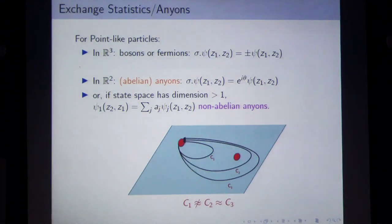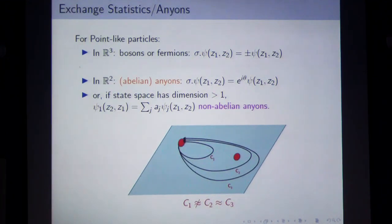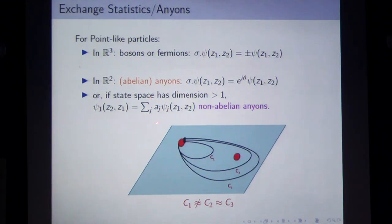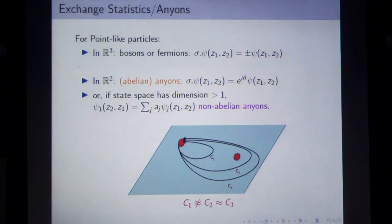On the other hand, it's possible that the state space is degenerate — it can have dimension bigger than one. The vector space of possible state configurations has high dimension. When you interchange particles, instead of ending up where you started with just a phase, you could find yourself in some superposition. This J goes over the dimension of the state space — that's how we can get non-abelian anyons. Non-abelian means that interchanging in one order versus the other gives a representation of the braid group with non-abelian image.